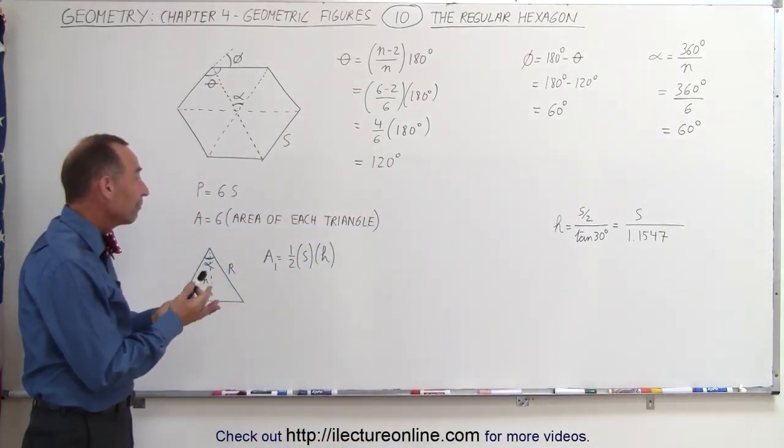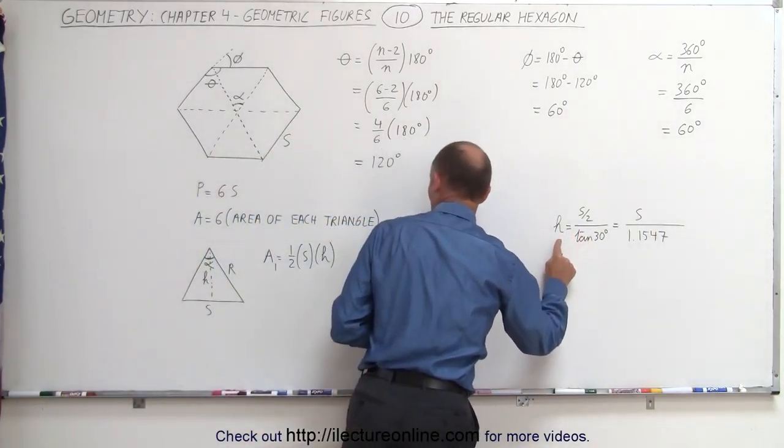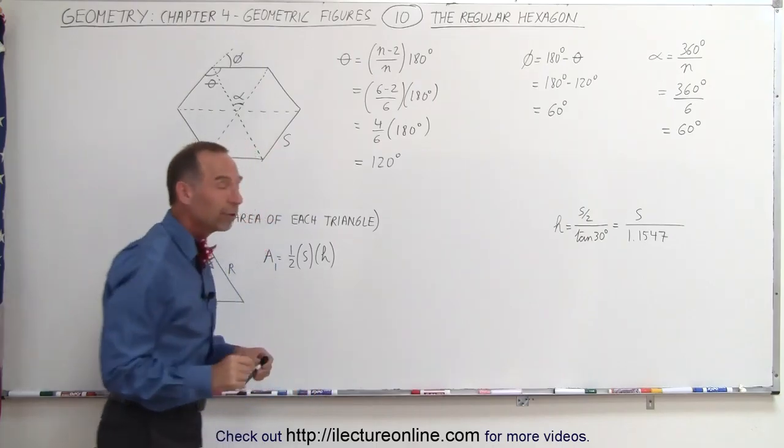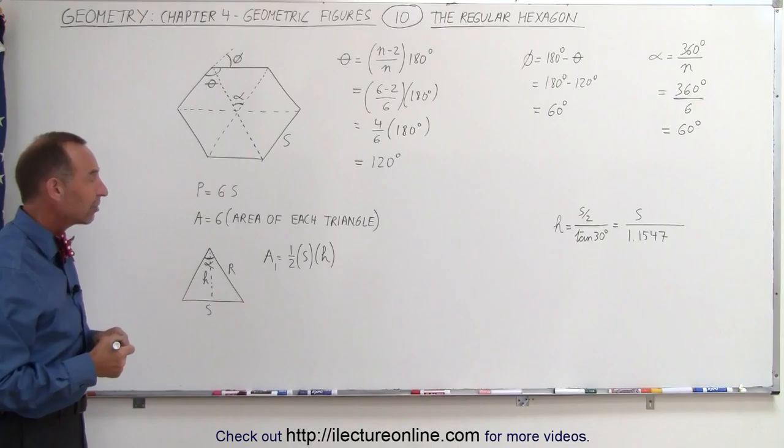So now that we know that, once we can figure out what the side is equal to, we can then find H. Now, once we find H, we can find the area of each triangle. Multiplying that times 6, we find the area of the entire hexagon.